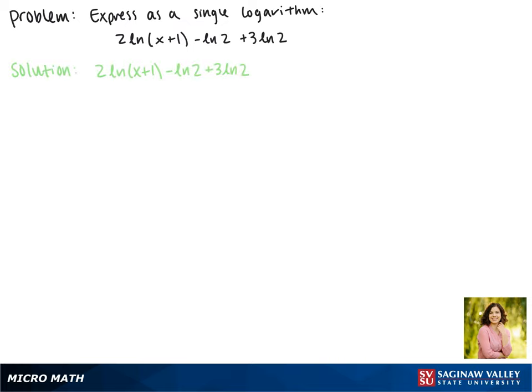We'll start with the property that coefficients become the exponents of what we're taking the log of. So this expression becomes the natural log of (x+1) squared minus the natural log of 2 plus the natural log of 2 cubed.